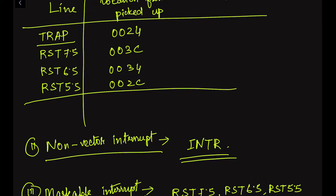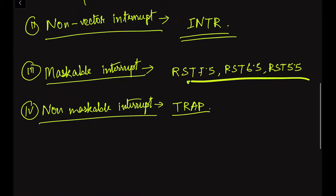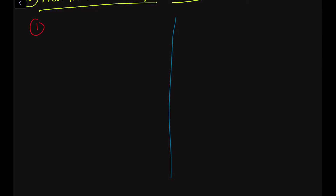Regarding priority, TRAP has the highest priority and RST 5.5 has the lowest priority among the hardware interrupts. In the upward direction we have higher priority. This priority determines which interrupt will be executed first when two different types of interrupts occur simultaneously.